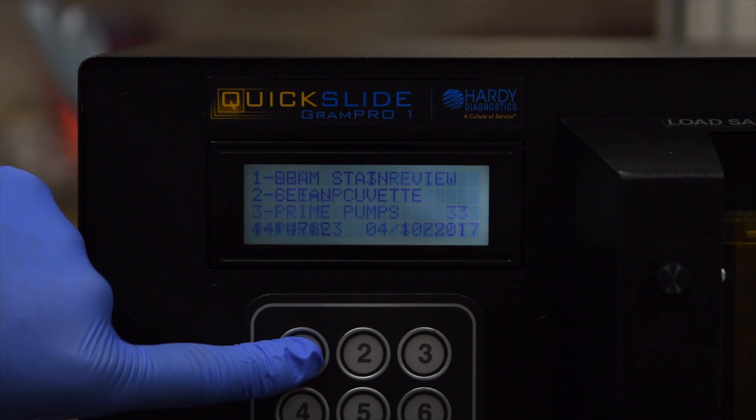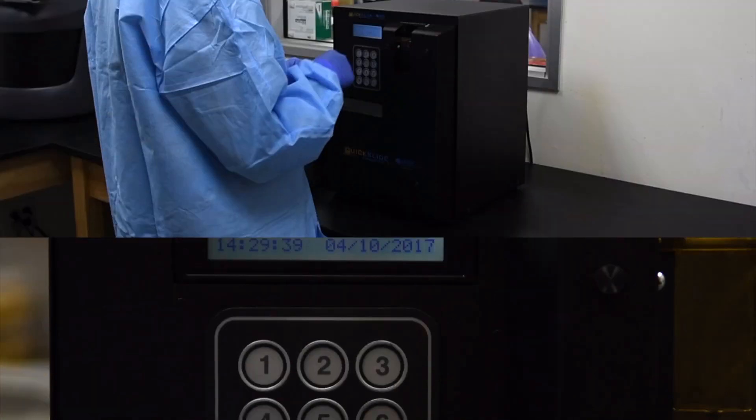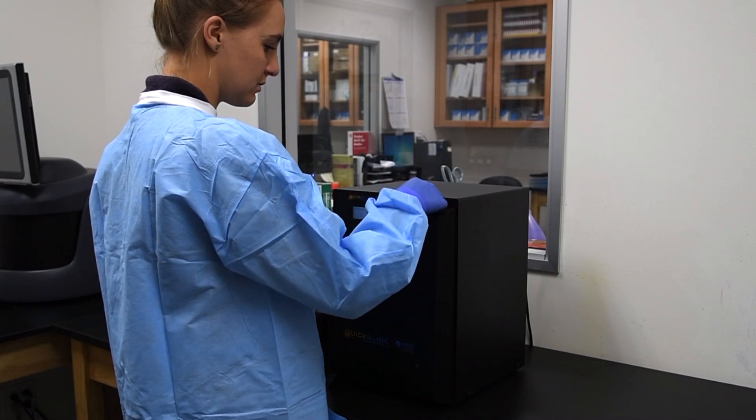Press 1 to select Run. Press 3 to select Prime. The GramPro 1 is now ready to run samples.